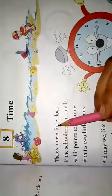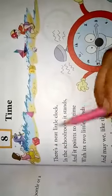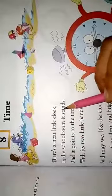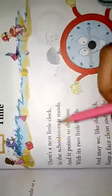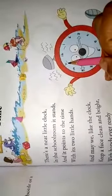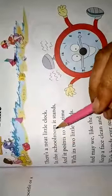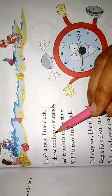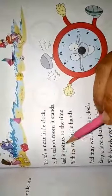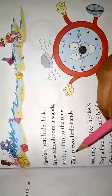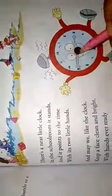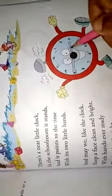There's a nothing little clock, near little clock, in the school room it stands. What is this little clock? And where is it? In the school room. And it points to the time with its two little hands. And this tells us the time with two little hands.